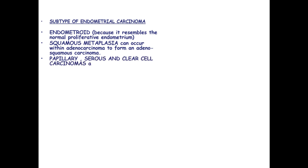We have subtypes of these endometrial carcinomas like endometrioid which resembles the normal proliferative endometrium. We have squamous metaplasia which can occur with adenocarcinoma to form an adenosquamous carcinoma. Papillary serous and clear cell carcinomas are aggressive forms of this carcinoma.